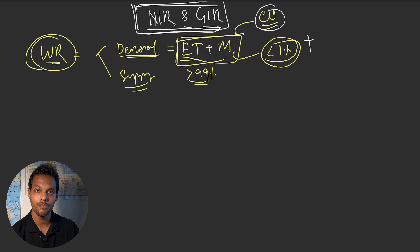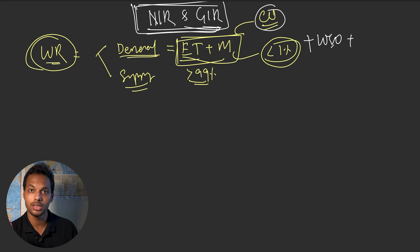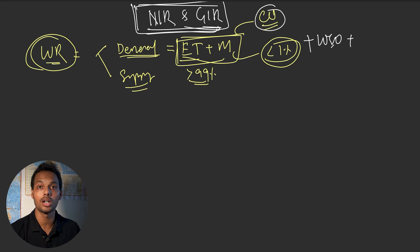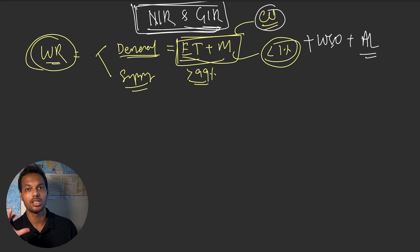Other demand factors include water for special operations — for example, if we are doing puddling or land preparation, water is required for that, which is called water for special operations. There are also different application losses such as percolation loss and seepage loss, which are also considered on the demand side.